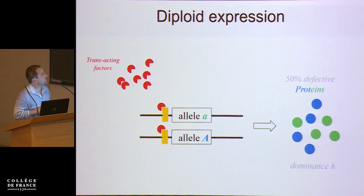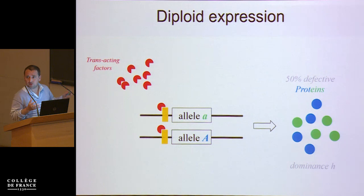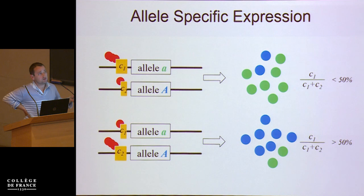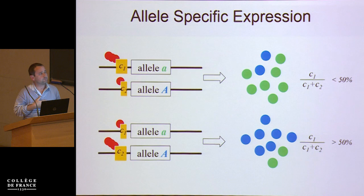Because you are in a diploid, you've got to consider the fact that when you've got the same allele at the cis regulator, you will express 50% defective protein if you are in a heterozygous individual with a deleterious allele. But if you've got a stronger cis regulator — C1 here is stronger than C2 — then the amount of defective protein will be higher than 50%. And the reverse: if the stronger regulator is C2, then you've got less than 50% defective protein, because the strength of the cis regulator provides higher or lower expression levels.